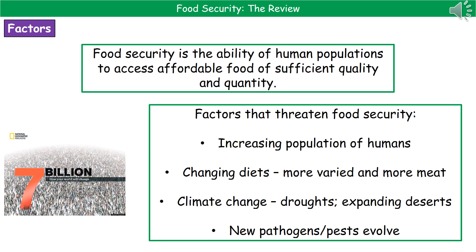The second factor affecting food security is changing diets — they're now far more varied and involve more meat. Thirdly, we have climate change, so things like droughts and expanding deserts mean we can't necessarily grow food in all the areas we used to. Finally, there's the risk of new pathogens or pests evolving, which could also affect our ability to produce enough food.